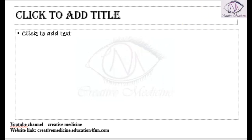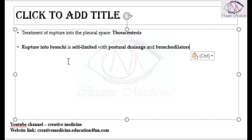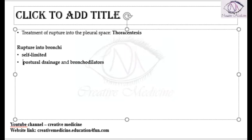If there is a rupture into the pleural space, then we do thoracocentesis and close the defect. If it ruptures into the bronchus, in most cases it is a self-limited condition. You can do postural drainage, and bronchodilators are given to the patient.